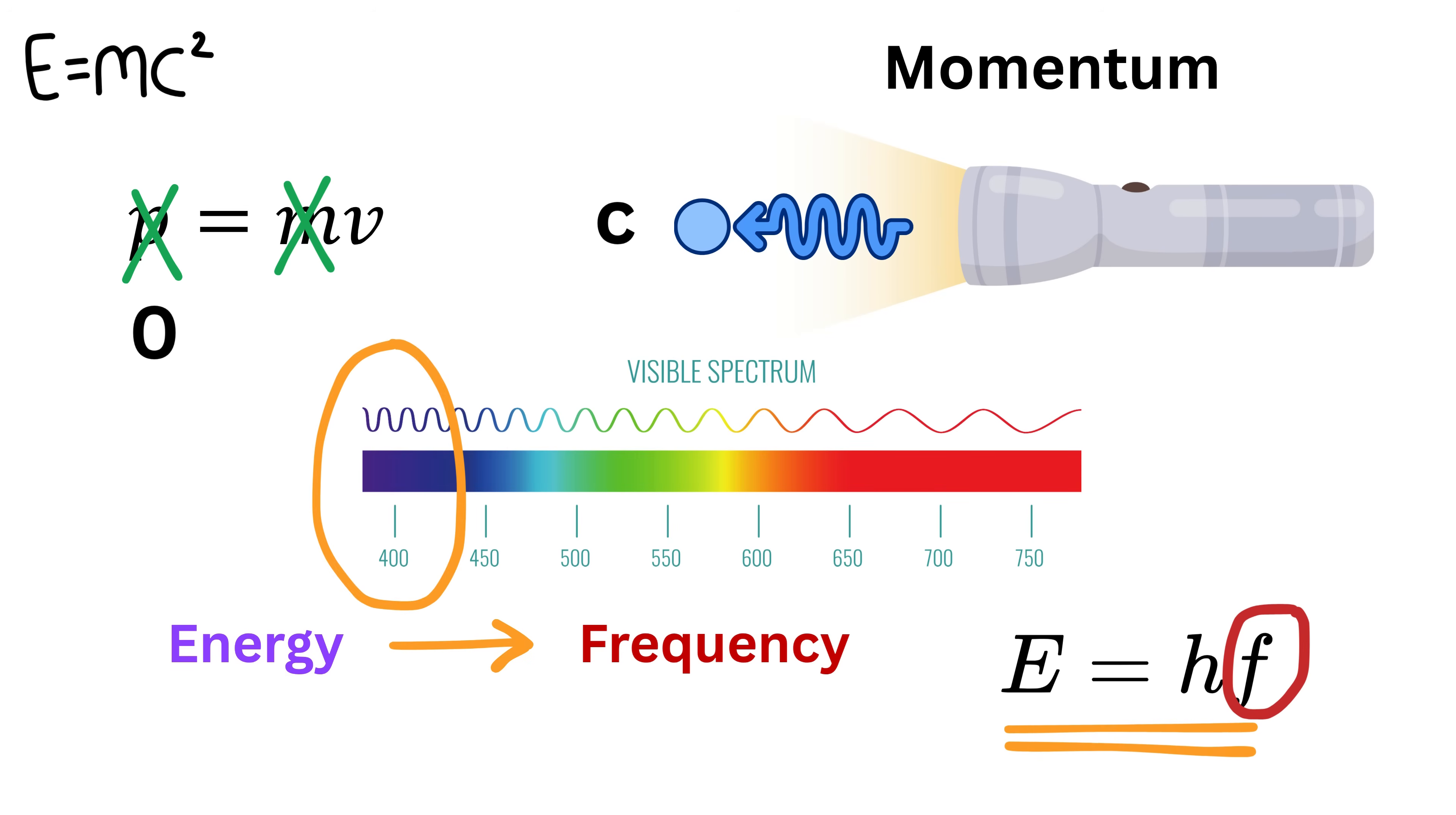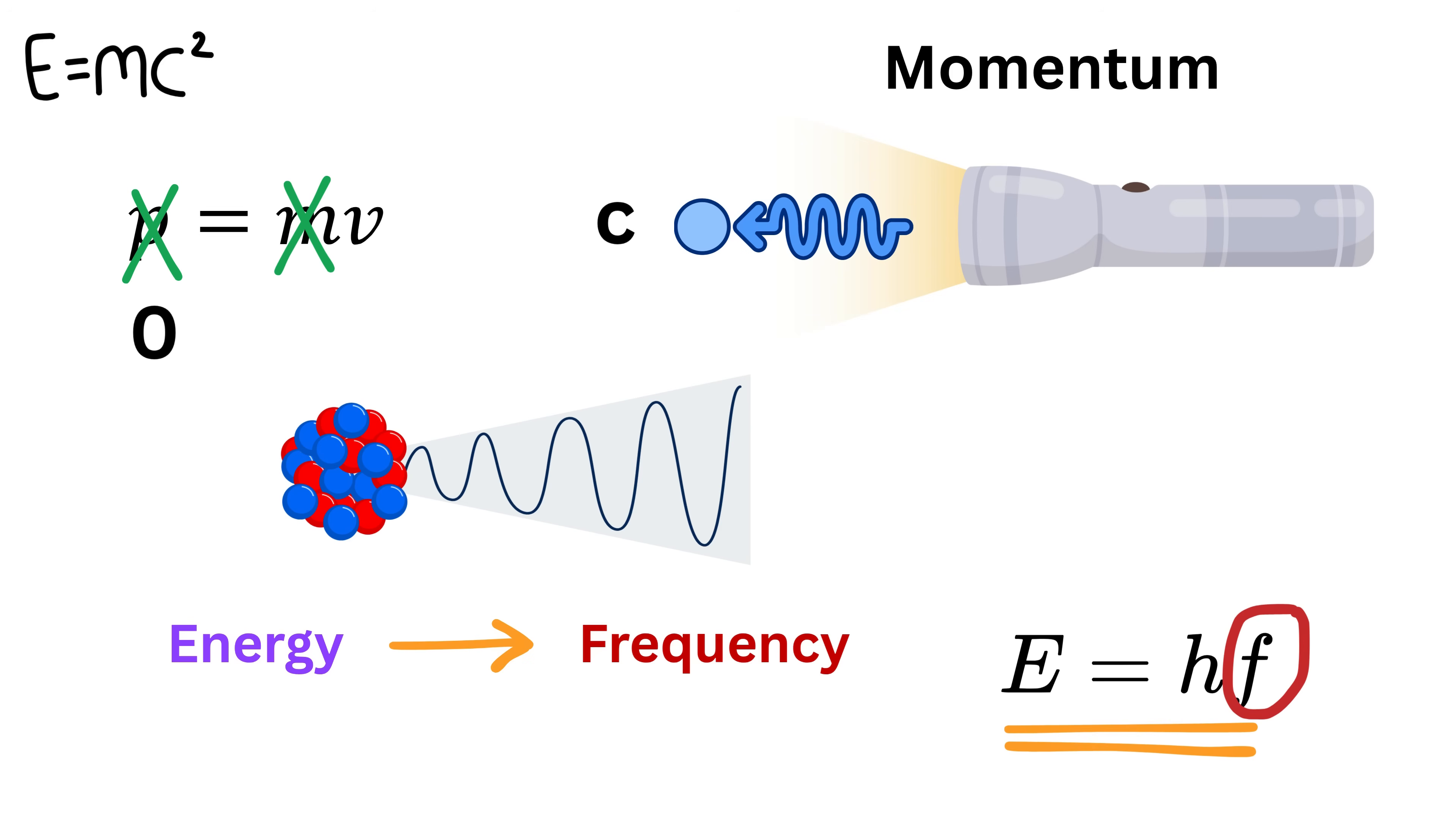This means that blue light, which has a higher frequency, carries more energy than red light, which has a lower frequency. Extremely high frequency waves like x-rays or gamma rays carry even more energy. So even though photons have zero mass, they still have energy simply because they have frequency.